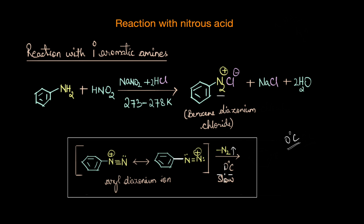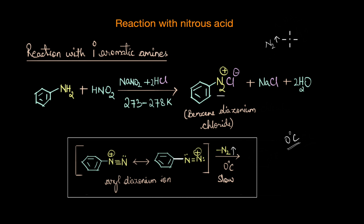These salts are stable only at low temperature. If we heat or increase the temperature, these species also decompose, releasing nitrogen gas. Therefore, the formation of a diazonium salt at low temperature is the confirmation test for the presence of primary aromatic amines, whereas the evolution of nitrogen gas is the confirmation test for primary aliphatic amines. We will dive deeper into the reaction of primary aromatic amines with nitrous acid later in the chapter.